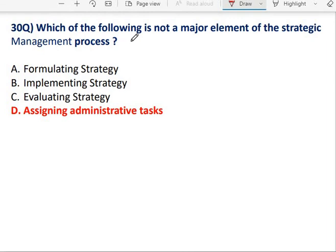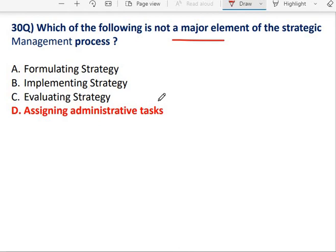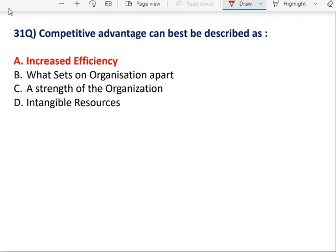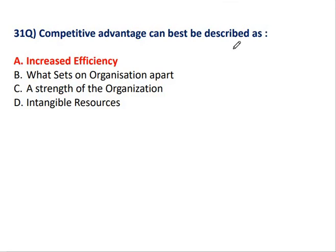Question No. 30: Which of the following is not a major element of the strategic management process? Formulating the strategy, implementing the strategy, and evaluating the strategy are elements. Assigning the administrative task is not an element of the strategic management process. Question No. 31: Competitive advantage can best be described as something that helps increase the efficiency.